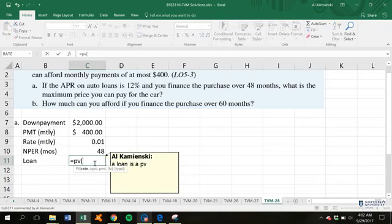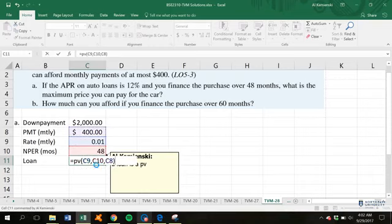So equals present value, the rate of 1% per month, for 48 months, we're going to make a $400 payment. There is no future value to concern ourselves with.